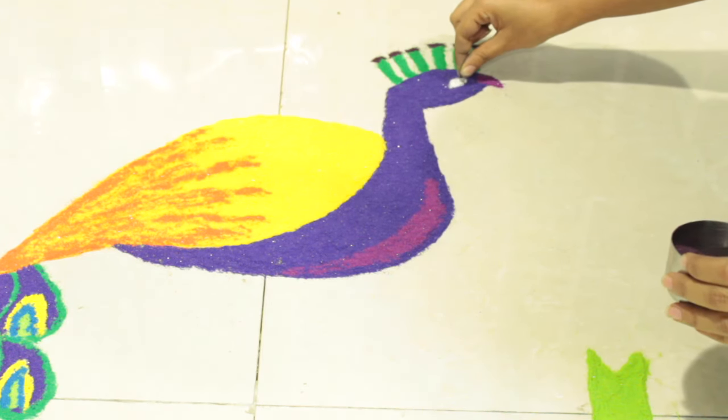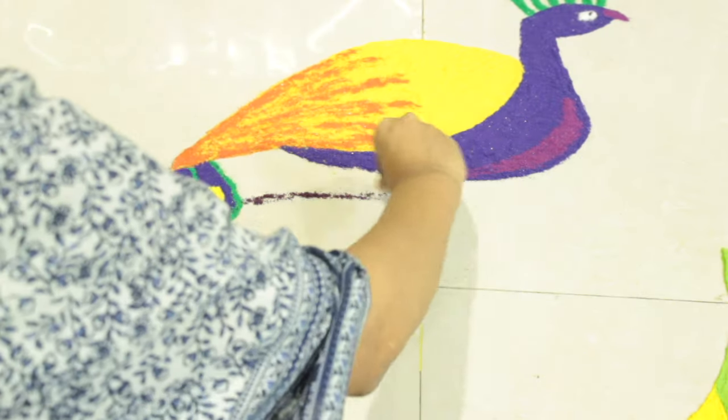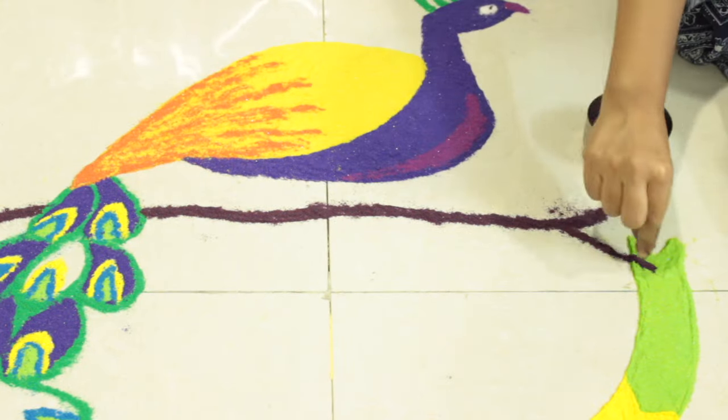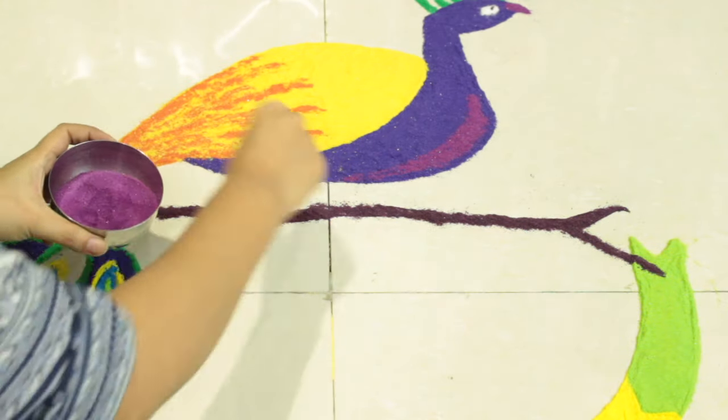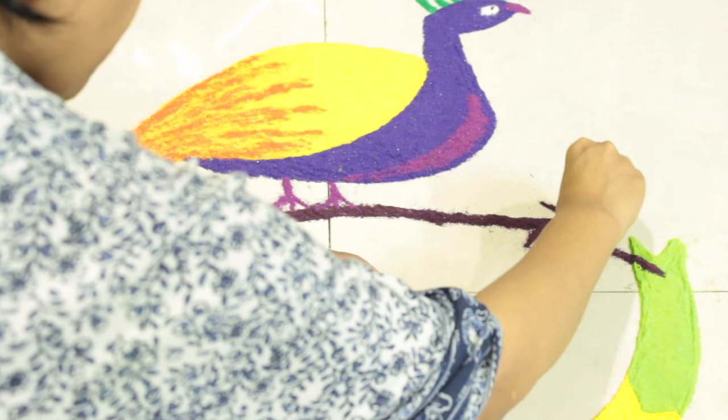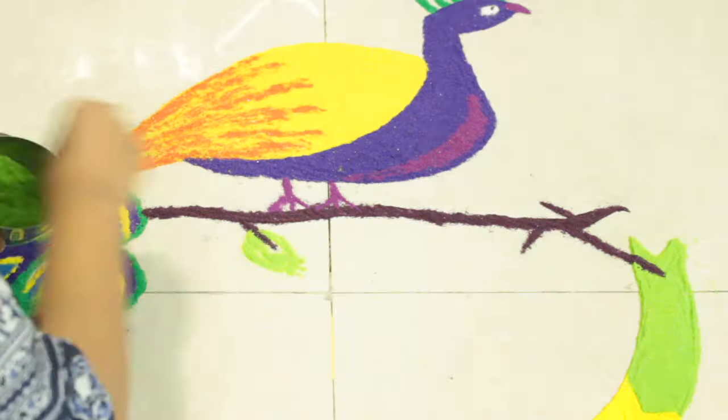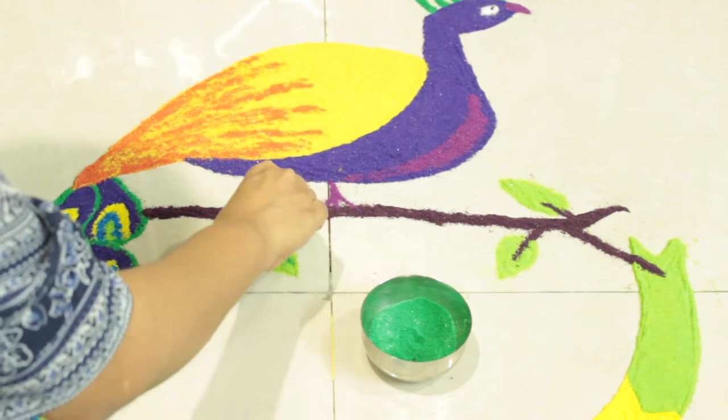Now we will draw a tree branch using brown color and draw the feet of the peacock resting on the branch using light purple color. We will now make a few twigs using brown color and make leaves using light green color, and shade these leaves with dark green color.